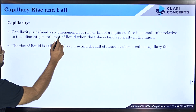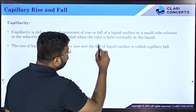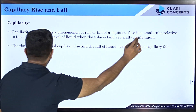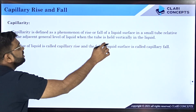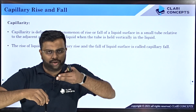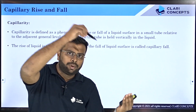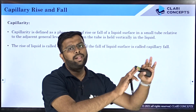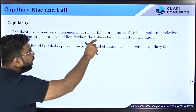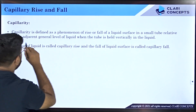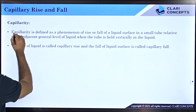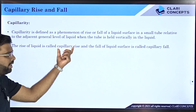By definition, capillarity is the phenomenon of rise or fall of a liquid surface in a small tube relative to the adjacent general level of liquid when the tube is held vertically inside the liquid. When a glass tube is placed in water, the water level rises; when placed in mercury, the mercury level drops — that is capillary fall. That is why the definition covers both rise and fall.